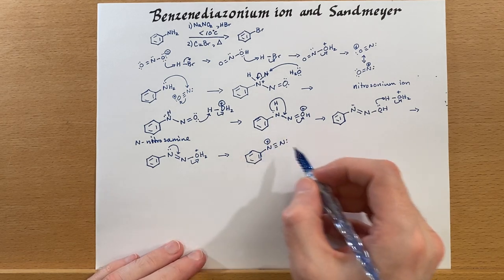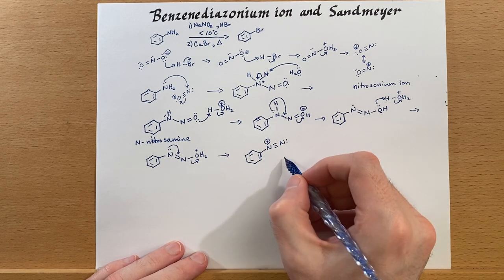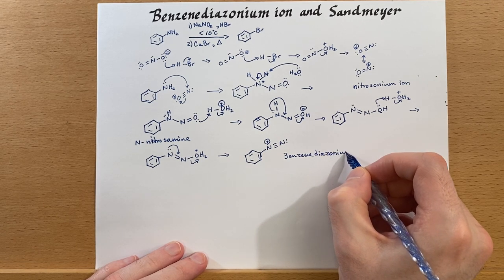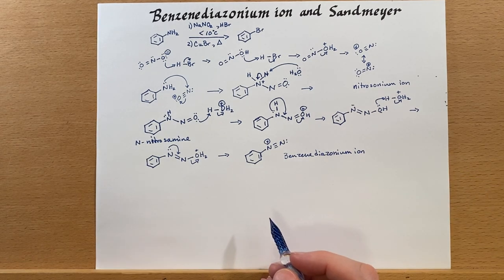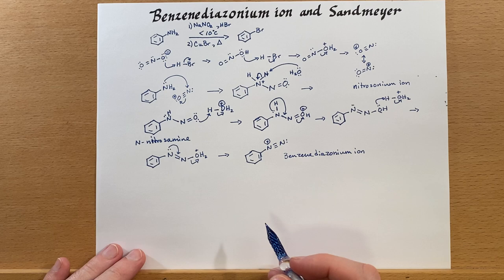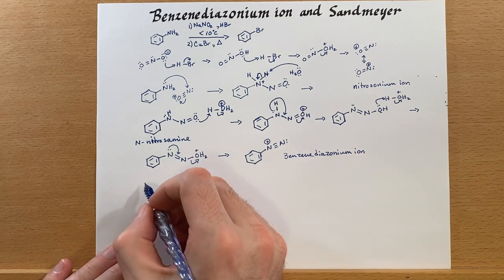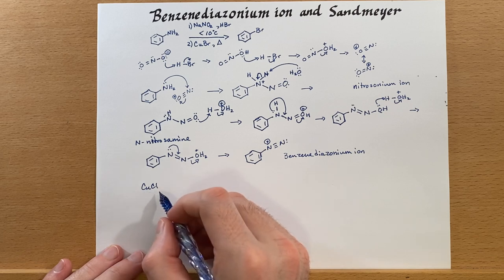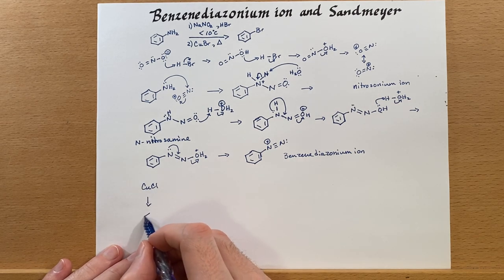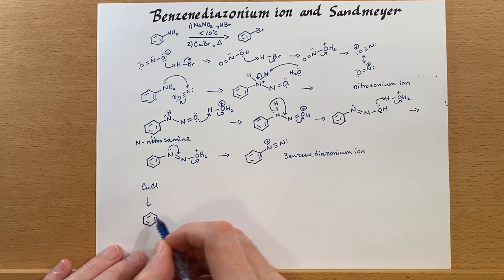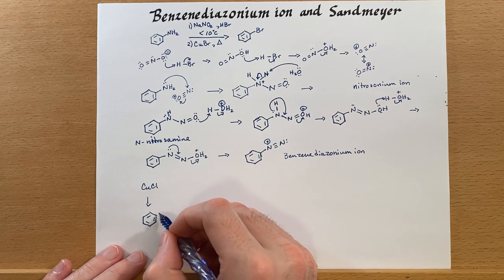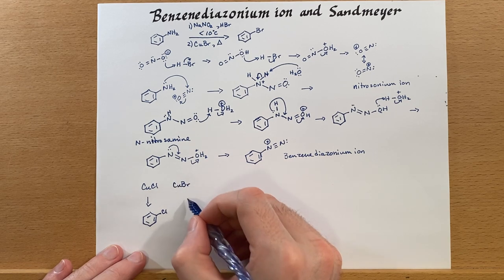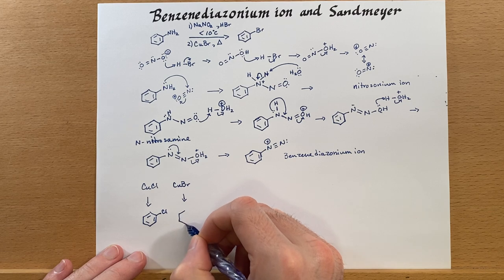Now this can do quite a few different reactions. So starting from the benzene diazonium ion, we can do what are called the Sandmeyer reactions. We take this and if we combine it with copper chloride, then we can generate the chloride where this diazonium ion was. We can do the same thing with bromine. Same reaction, same kind of result.